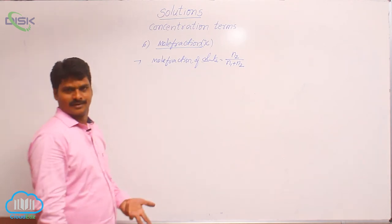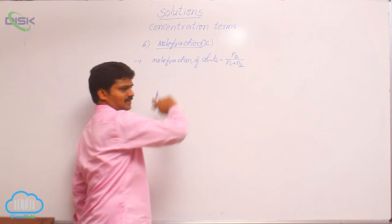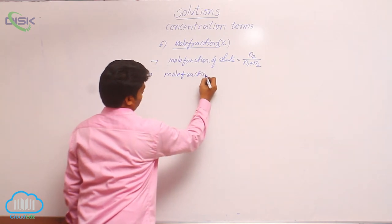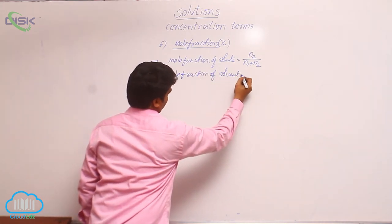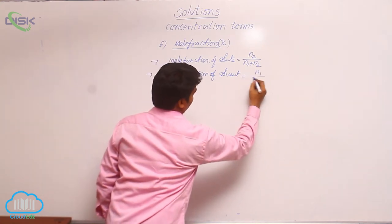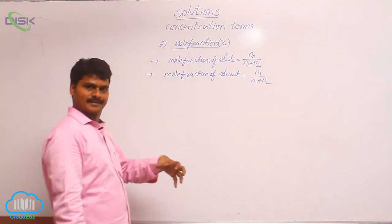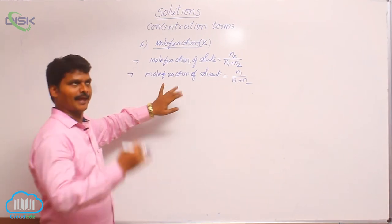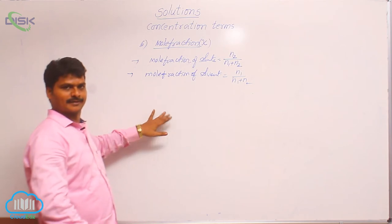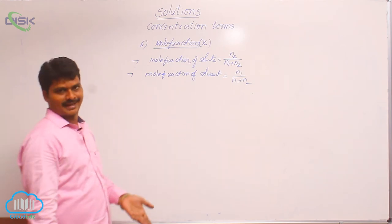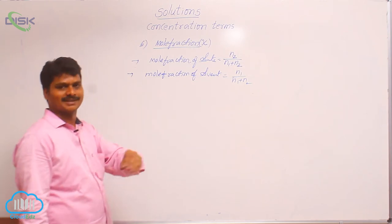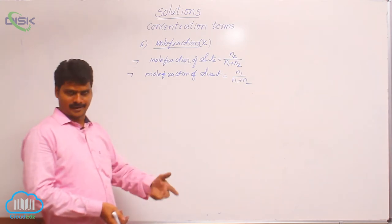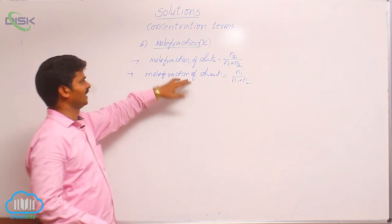Based on the number of components in the solution, the denominator changes. Mole fraction of solvent = n1 / (n1 + n2). If the solution is binary, use this formula. If ternary, it becomes n1 / (n1 + n2 + n3). If quaternary, n1 / (n1 + n2 + n3 + n4). The denominator changes based on whether the solution is binary, ternary, or quaternary. Here we are confining to binary, so mole fractions of solute and solvent are written accordingly.